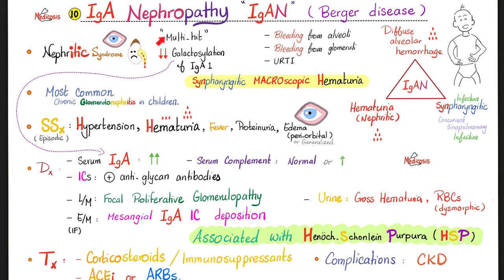IgA nephropathy is a genetic disease — the multi-hit hypothesis. Decreased galactosylation of IgA causes it to accumulate in the serum and deposit in the kidney, lungs, and even skin in Henoch-Schönlein purpura. Features: hypertension, hematuria, fever, proteinuria, and possible periorbital swelling, though less common than in PSGN. IgA nephropathy is the most common chronic glomerulonephritis in children. It presents as a triad of hemoptysis, hematuria, and concurrent pharyngitis — synpharyngitic macroscopic hematuria. Days, not weeks. IgA deposits are found in the mesangium. Treat with immunosuppressants and ACE inhibitors or ARBs. Don't forget the association with Henoch-Schönlein purpura.